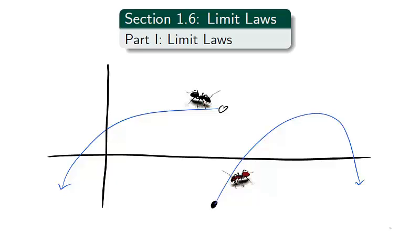In section 1.5, we used graphs to get an intuitive understanding of limits. We visualized the limit at a point as the height of two ants crawling from the left and right when and if they meet.